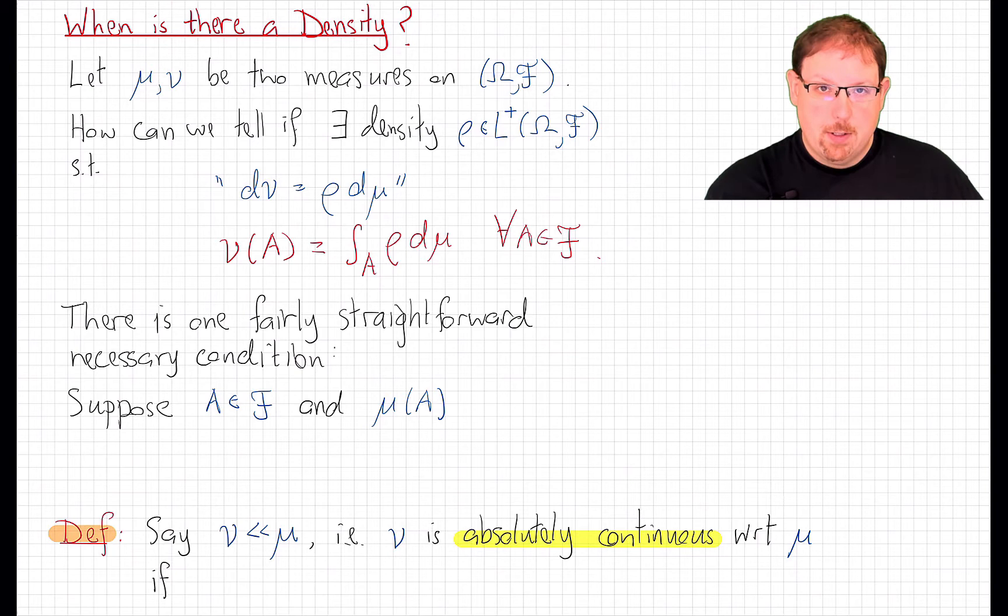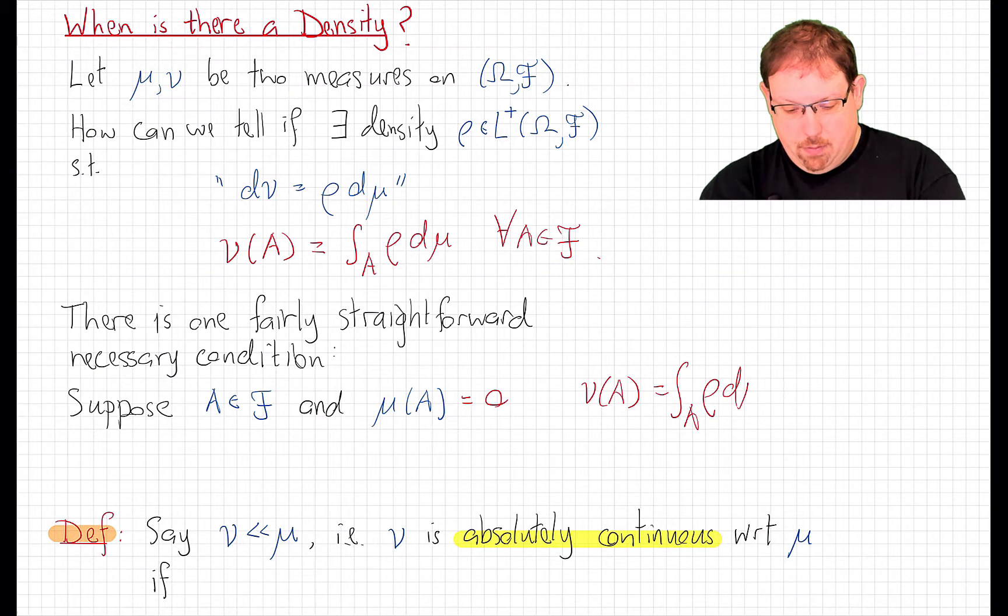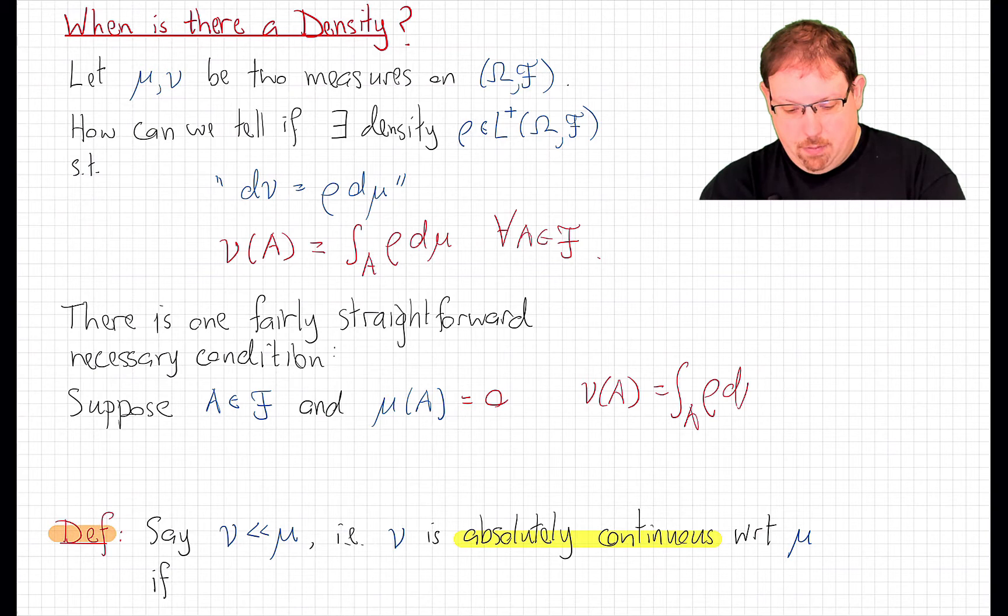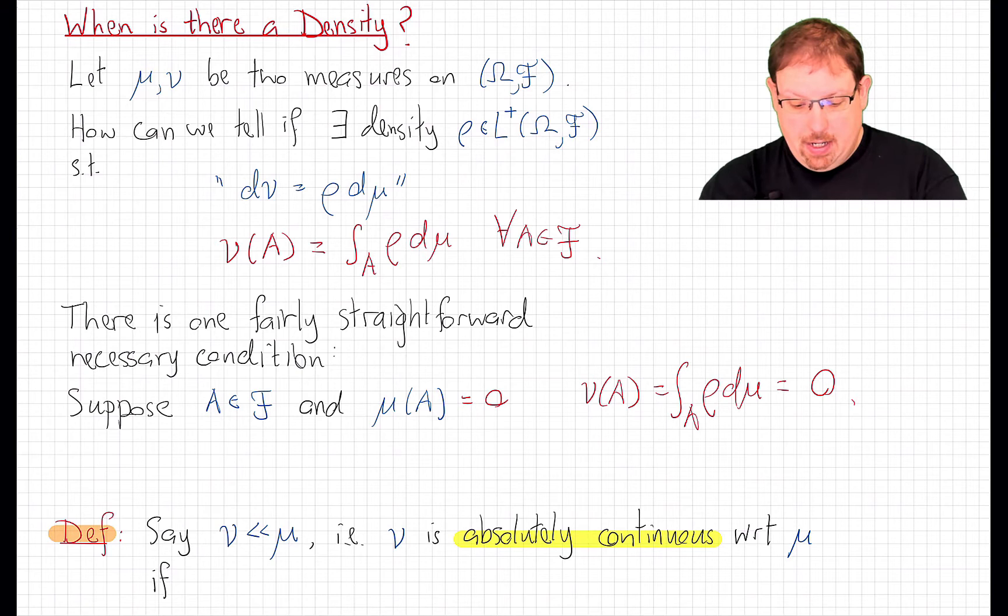And that is as follows. Suppose that the measure mu, the one we're trying to find a density against, charges a set with measure zero. Well, if that happens, then if a density exists, suppose that nu of A can be calculated as the integral over A of rho d mu. Since A is a set of measure zero, we know that means that this gives zero. Integrating over a set of measure zero always gives zero. And just to be clear, that's true even if the density function rho takes infinite values because of our convention that in the measure theory world, zero times infinity is equal to zero.